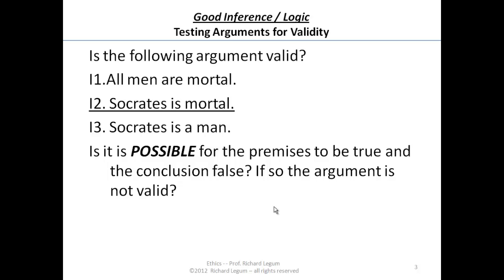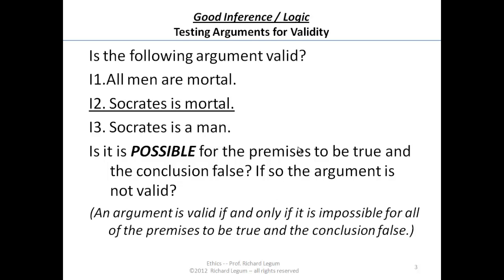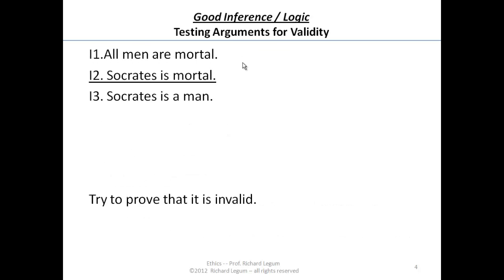How do we go about proving that this is not valid? The question you need to ask is based on the definition. Remember, a valid argument: it's impossible for the premises to be true and the conclusion false. So the question is: is it possible for these premises to be true and the conclusion false? An argument is valid if and only if it's impossible for all the premises to be true and the conclusion false.